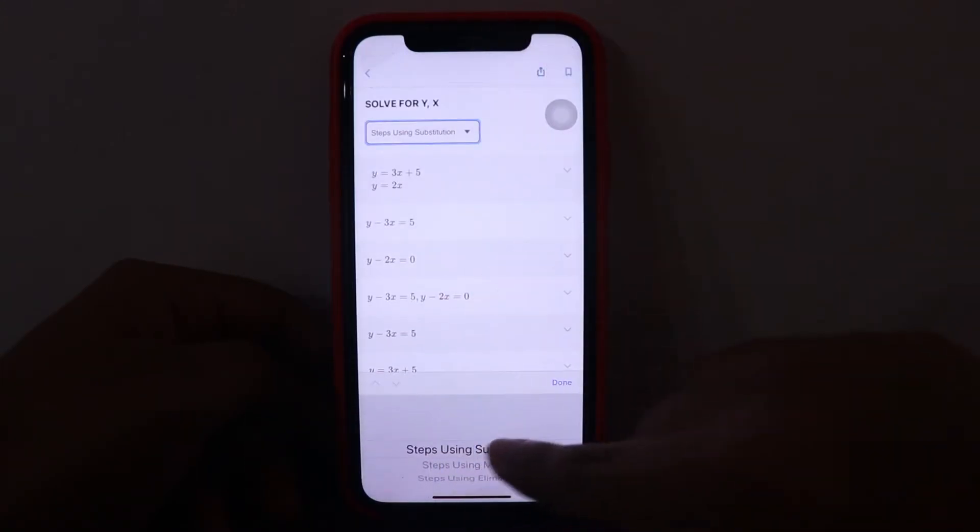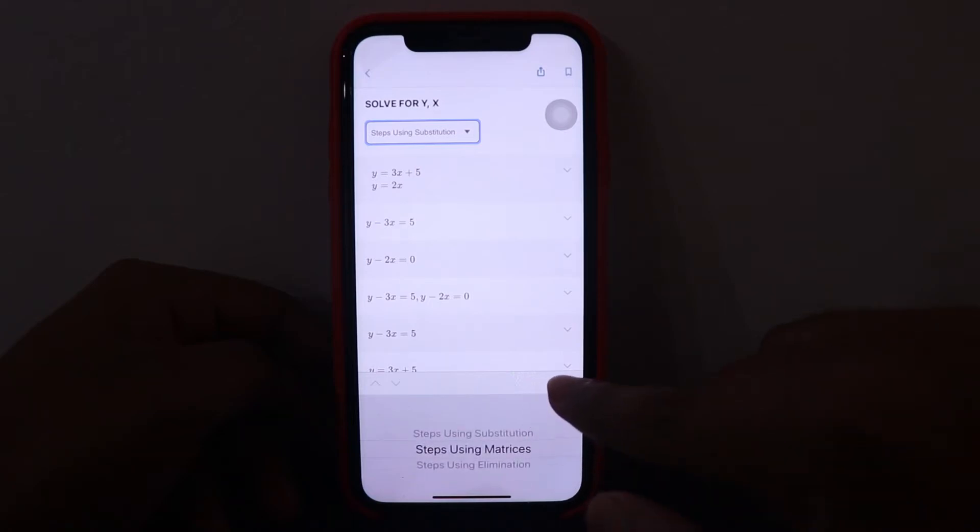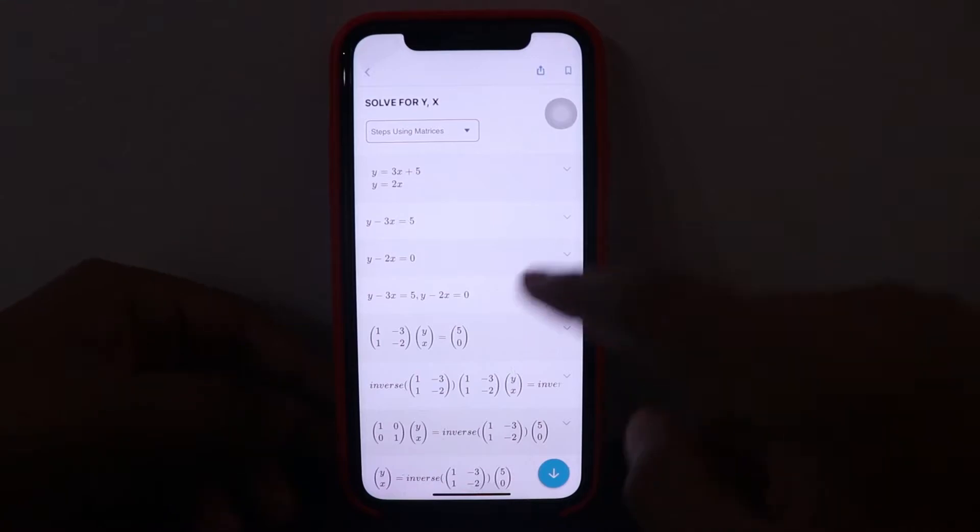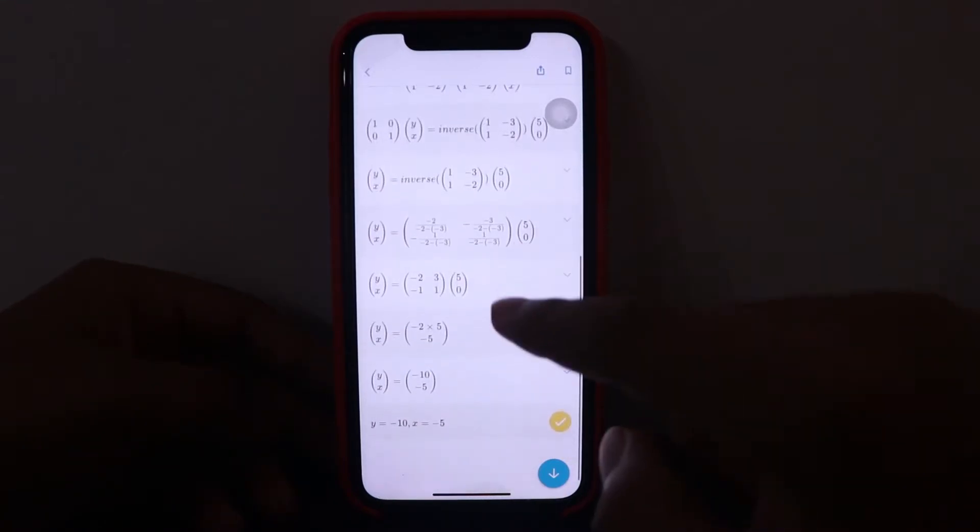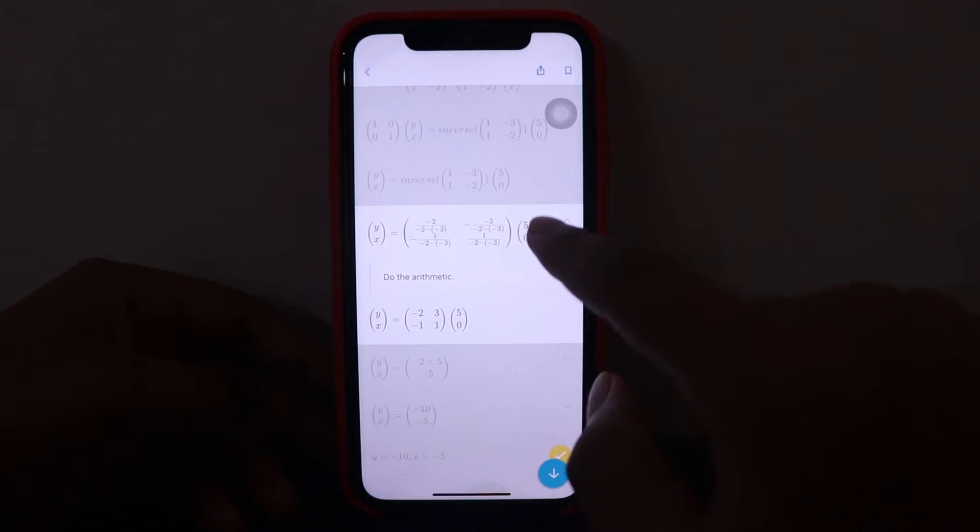Similarly, you can select for different methods as well. So you can use steps using matrices. So here's steps using matrices. You click on any step and it gives you like how it is done.